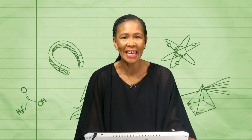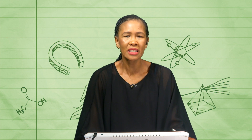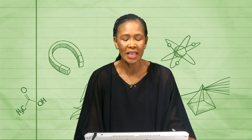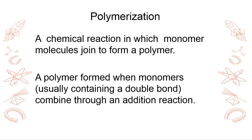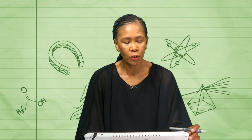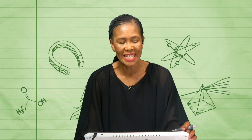For example, if you've got an alkene — say ethene — that is a monomer. So if many of them join together, they form what is called a polymer. A polymer is formed when monomers, usually containing a double bond, combined through an addition reaction. So it is not easy to form a polymer from alkanes, but it is easy from alkenes.